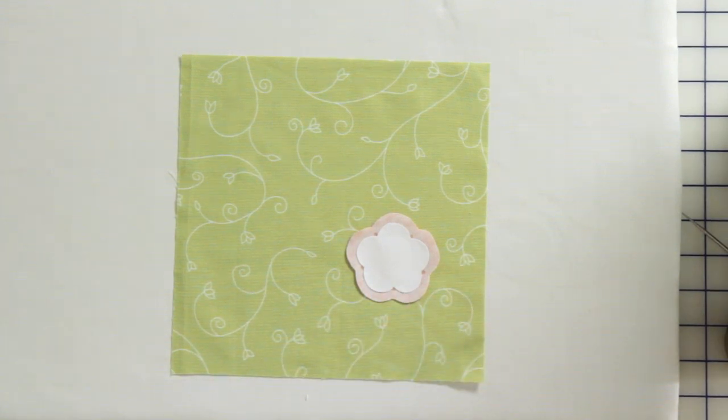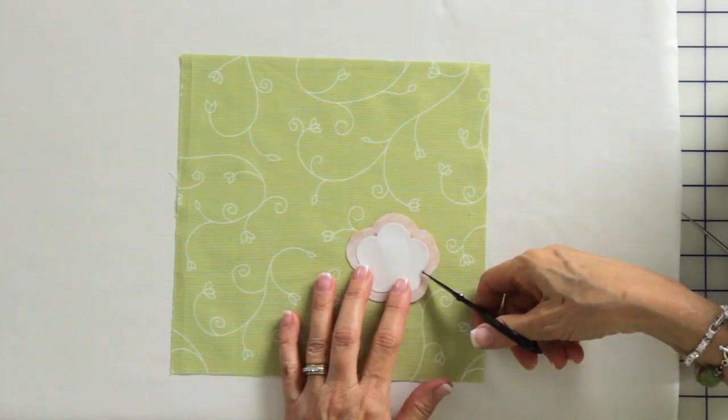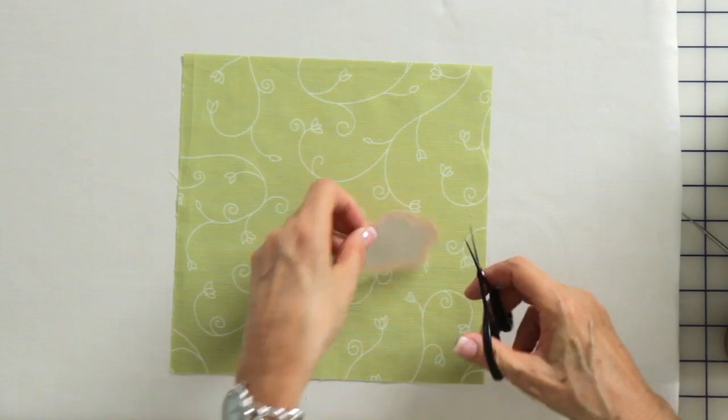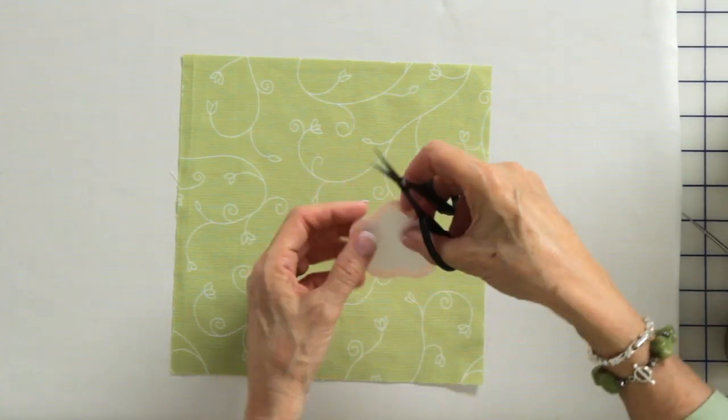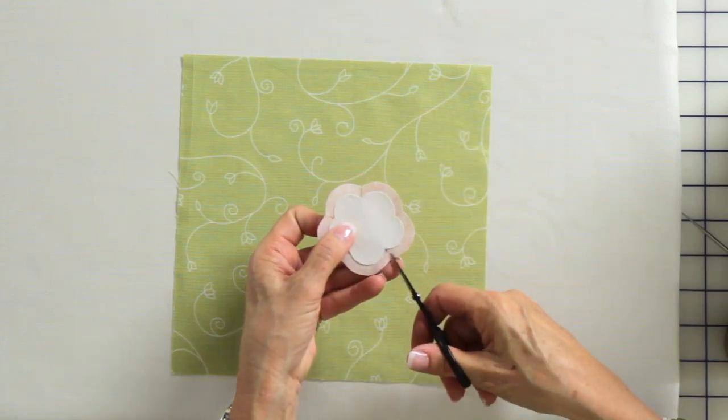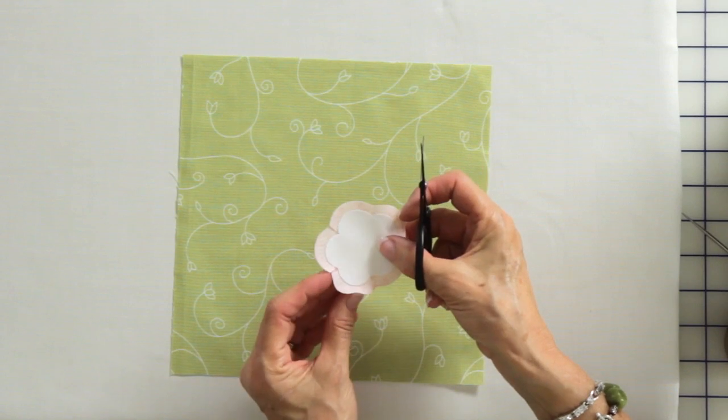I'm going to snip all the way in right to the point. Now that frees this up so this fabric can turn this way and this one can turn that way and you'll have a nice crisp little bend right there.